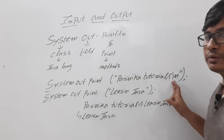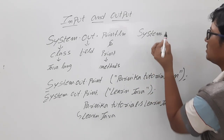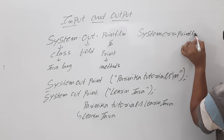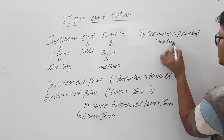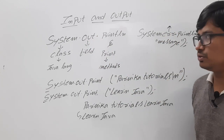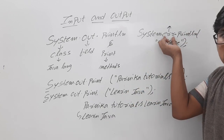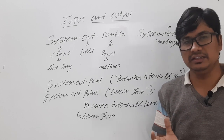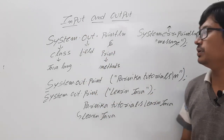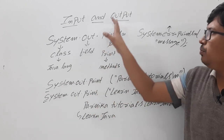Similarly, we can display output using System.err.println. Whatever you write, that message will be displayed as output. The difference between the out field and the err field is that out is for normal output, whereas err is for error messages. However, both work in the same way functionally.